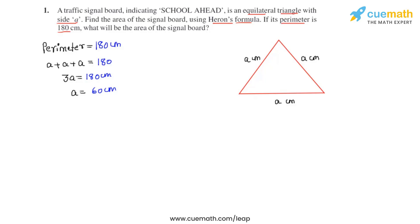So we get the value of the side length to be equal to 60 centimeters. Now let's find the semi-perimeter which is nothing but half the perimeter. So we can divide the perimeter's value by 2, that is 180 divided by 2 which gives us 90.